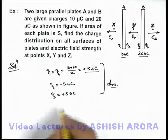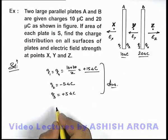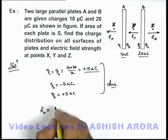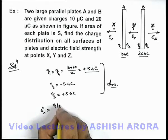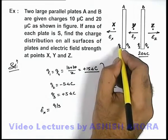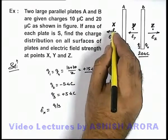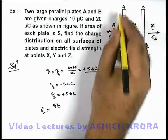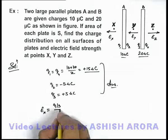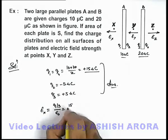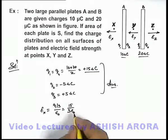For the magnitudes, we know that in front of a metal sheet, whenever there is a surface charge distribution, the electric field can be given as sigma by epsilon naught. So the electric field at point X can be written as Q1 divided by S (surface charge density) divided by epsilon naught. This gives a value of 15 / (S·ε₀), and it will be in the leftward direction.